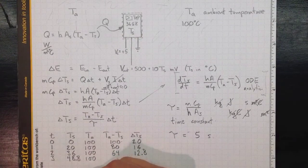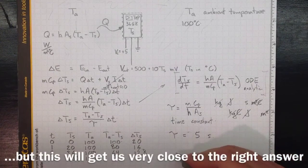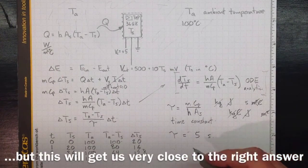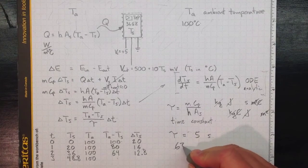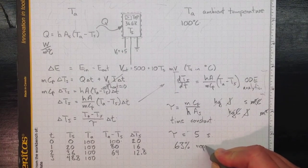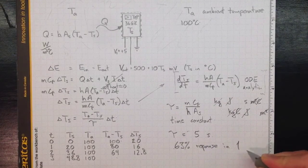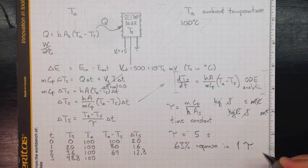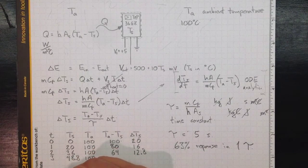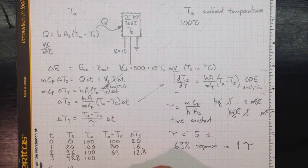And if we follow this along, we'll find that by the time we reach the time constant, that we get to about sixty-three percent of our response in one time constant tau. So that by the time we get to five, this should be up to sixty-three degrees, give or take.